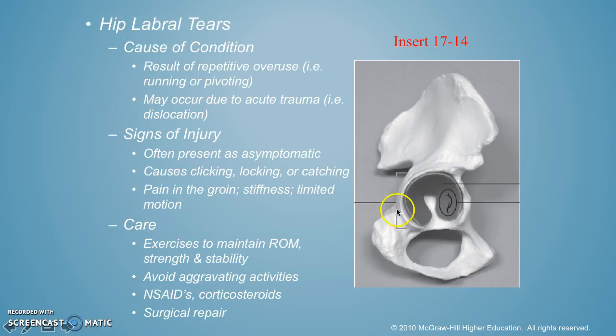This is a labral tear. You can see the image of the labrum here. The cause is repetitive overuse, and it might occur due to acute trauma like a dislocation — you can actually tear your labrum. Signs of injury: they often present as asymptomatic, so they don't have symptoms. There may be clicking, locking, or catching, pain in the groin, stiffness, and limited motion. You've got to do some exercises to maintain your range of motion, avoid what hurts it, NSAIDs, steroids, and they might need surgery. Interestingly, sometimes it can be asymptomatic — they won't even know they have it.